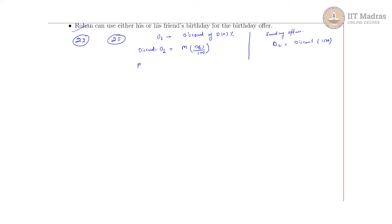The payable amount after applying only the first offer — the birthday offer — will be the initial purchase amount P minus the discount. The discount is DA divided by 100, applied to P. So the payable amount P1 equals P times (100 minus D(A)) divided by 100. This is the payable amount when we apply Offer one.